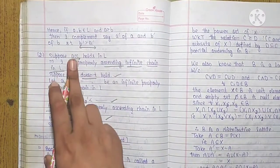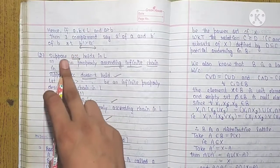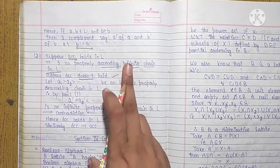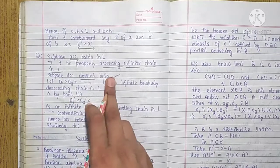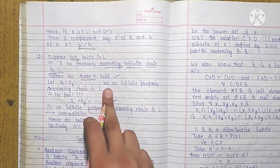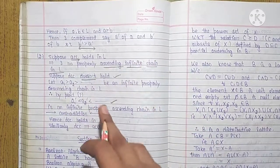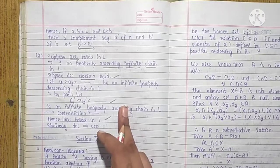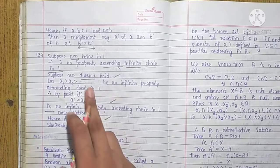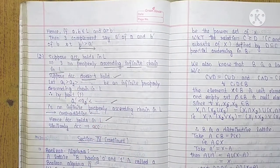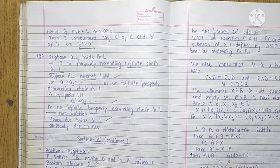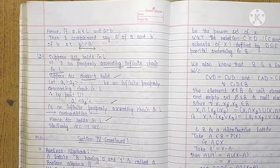In the same manner, if we take DCC to hold, suppose ACC does not hold, so there exists an infinite properly ascending chain. Taking complements reverses the inequalities, giving an infinite properly descending chain, which contradicts DCC. So ACC holds. This completes the proof. Thank you.